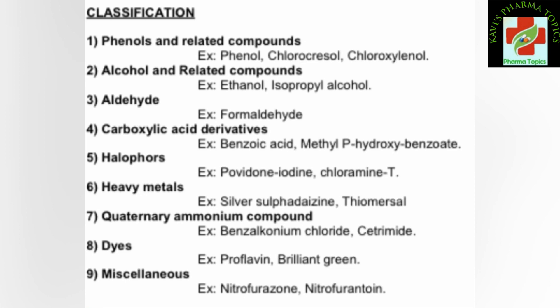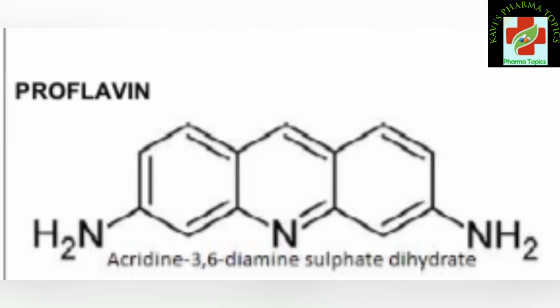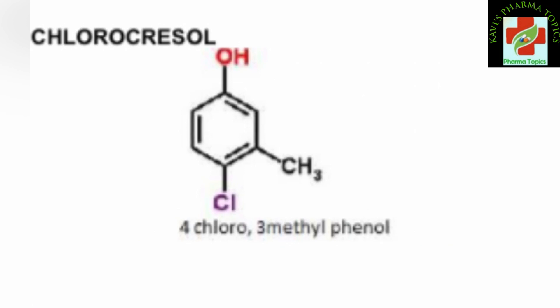The important chemical structures with star marks are proflavine and chlorocresol. For proflavine, the chemical structure has a benzene ring system with NH2 groups at positions 1 and 4. The IUPAC name is 3,6-diaminoacridine sulfate dihydrate.